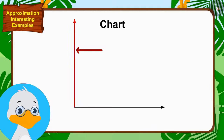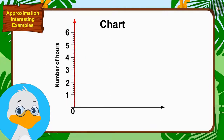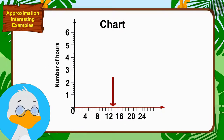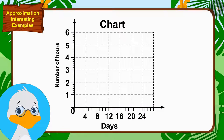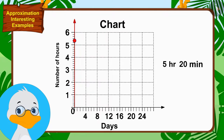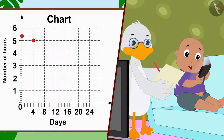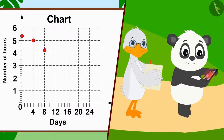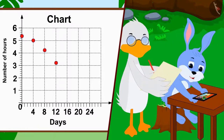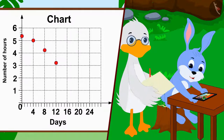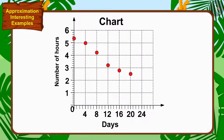Uncle has shown the number of hours on the vertical line of the chart, and the number of days on the horizontal line. Currently, children spend an average of 5 hours and 20 minutes on the phone every day. This is shown by the uncle making a point on the vertical line. Uncle started recording the average time spent on the phone every 4th day on the chart, and recorded the time spent for 24 days.